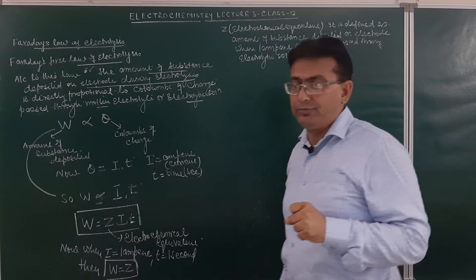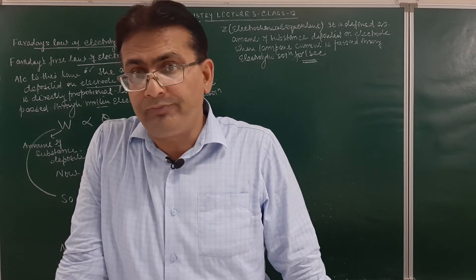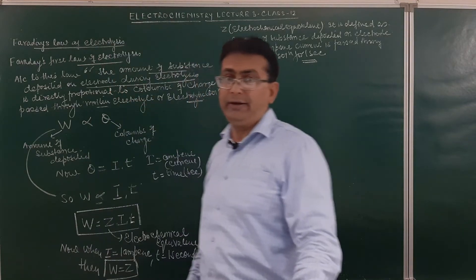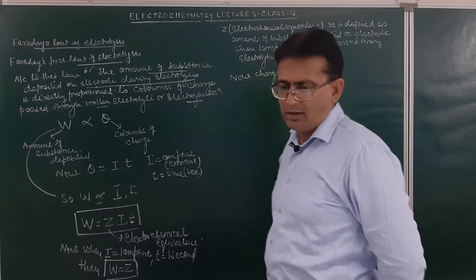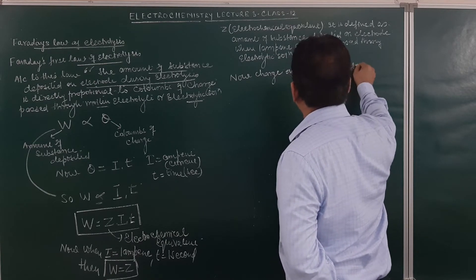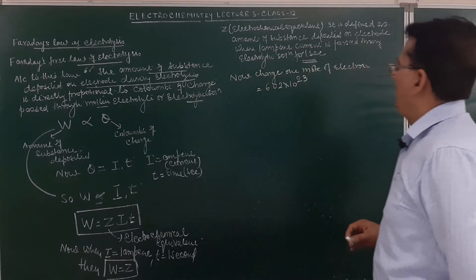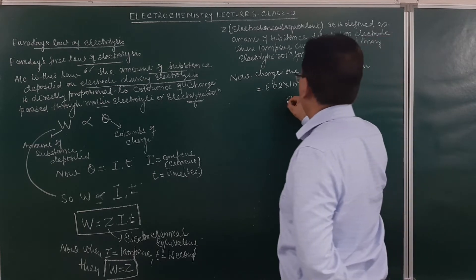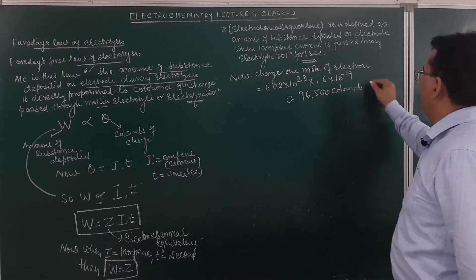Now, what is the charge on the electron? It is 1.602 × 10⁻¹⁹ coulombs. The charge on 1 mole of electrons will be 1.602 × 10⁻¹⁹ × 6.02 × 10²³, which equals approximately 96500 coulombs — that is 1 Faraday.